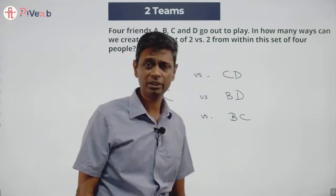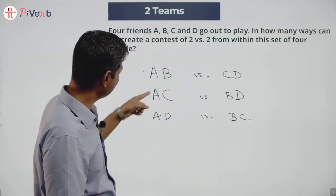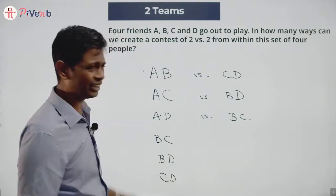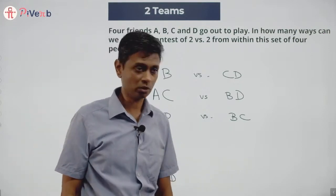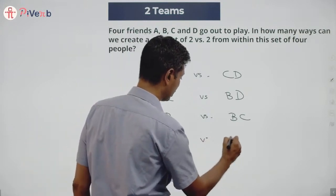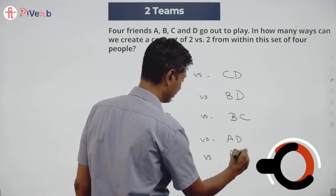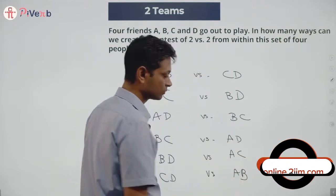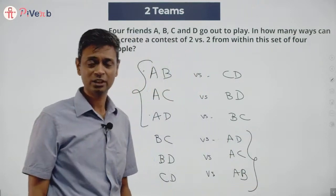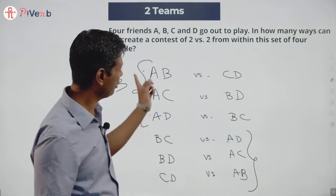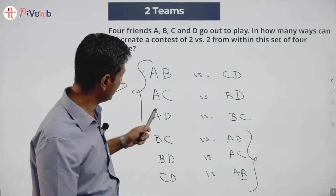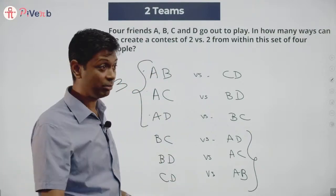From four, select two: A-B, A-C, A-D, B-C, B-D, C-D. The other two automatically form the opponent pair. You could select B-C, B-D, C-D. So I have to select two out of four and the other two automatically select themselves. We can list everything and count, but that doesn't mean there are six matchups — there are only three.